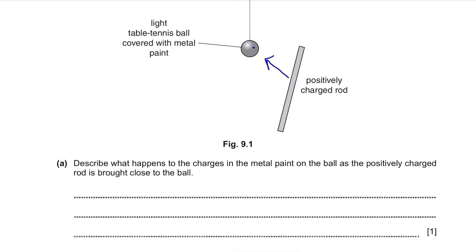Part A. Describe what happens to the charges in the metal paint on the ball as the positively charged rod is brought close to the ball. Well, only negative charges move. Therefore, we say the negative charges in the metal paint on the ball move towards the rod because they are attracted to positive charges on the rod.